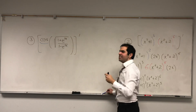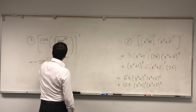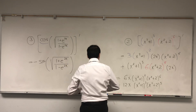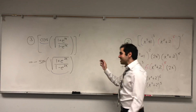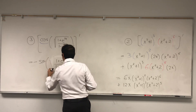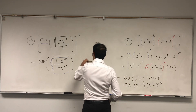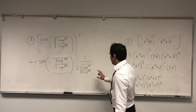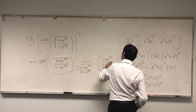First, you differentiate the outside function, for which you get minus sine of square root of 1 plus e to the 2x over 1 minus e to the 2x, times the derivative of the inside. And if you want to do the derivative of that, again: outside function, inside function. The outside function is the square root part. And remember, the derivative of square root of x is 1 over 2 square root of x. So this becomes 1 over 2 times square root of 1 plus e to the 2x over 1 minus e to the 2x, times the derivative of the inside, which is the derivative of 1 plus e to the 2x over 1 minus e to the 2x.